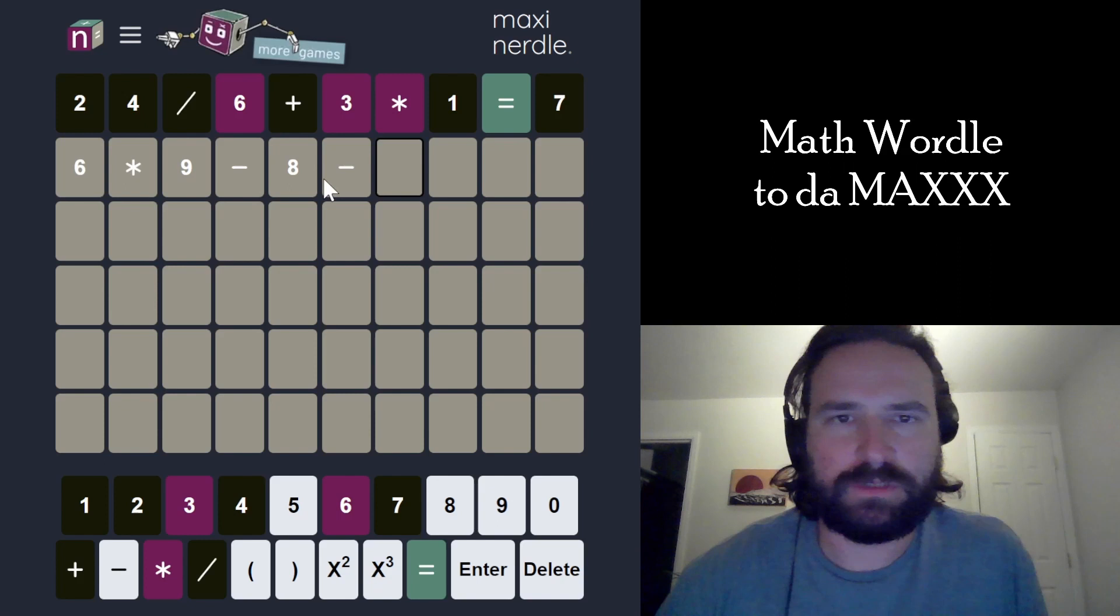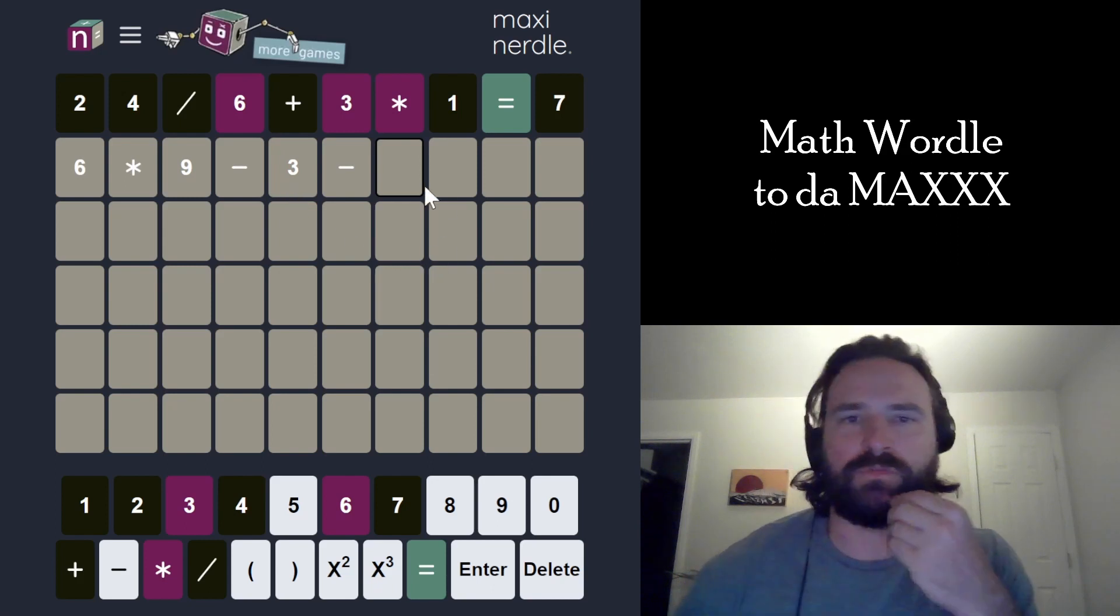So maybe I could make this bigger out here or something. 6 times 9 is 54 minus 8. I've got to get a 3 involved here. So minus 3 is 51 and then, okay, that's not going to work for a single-digit number.